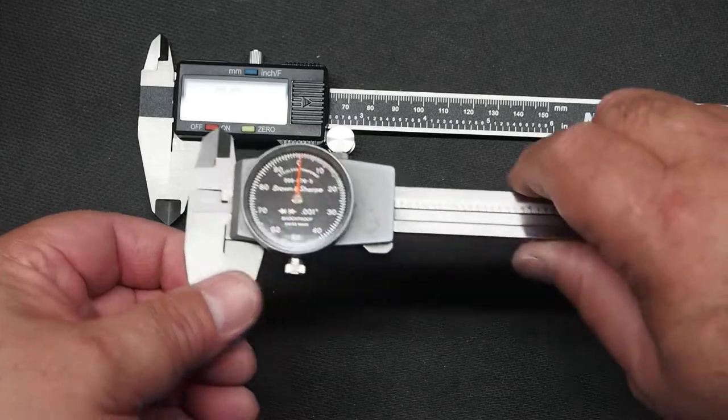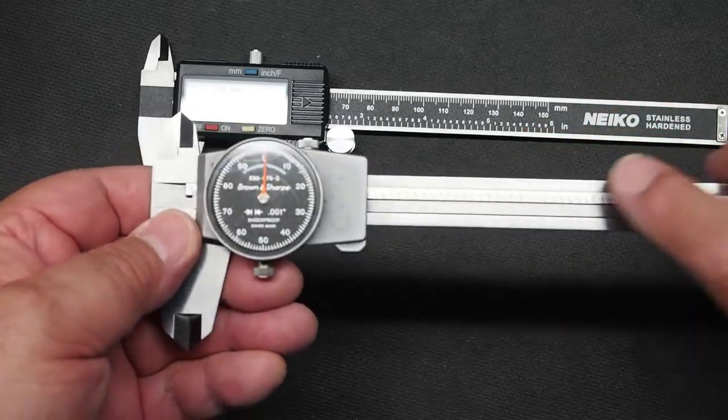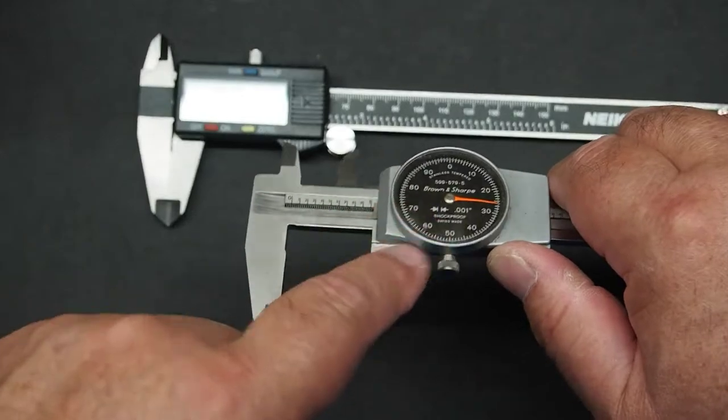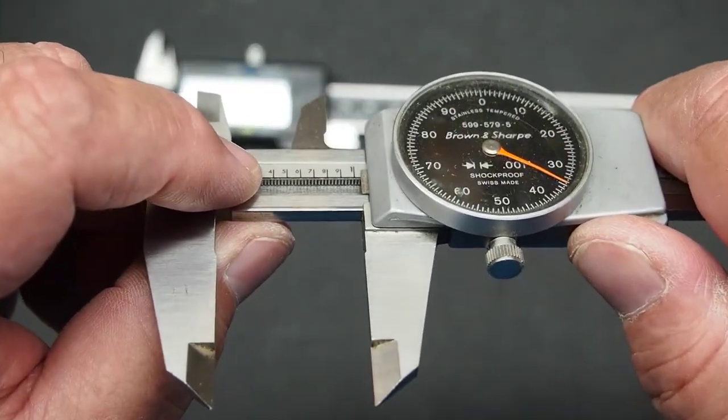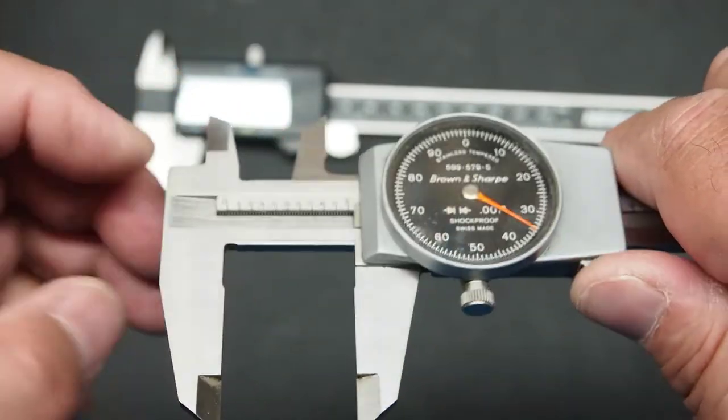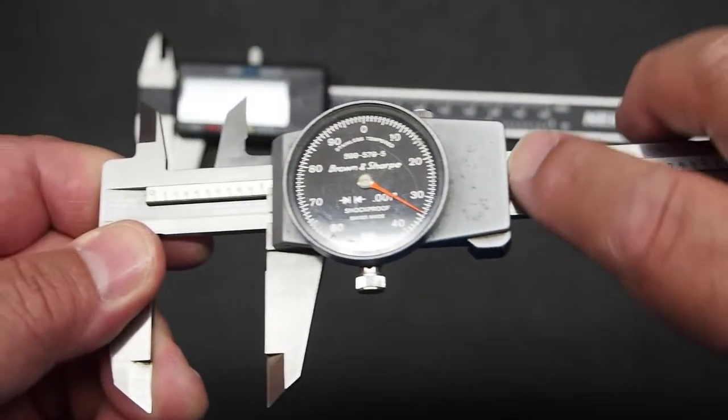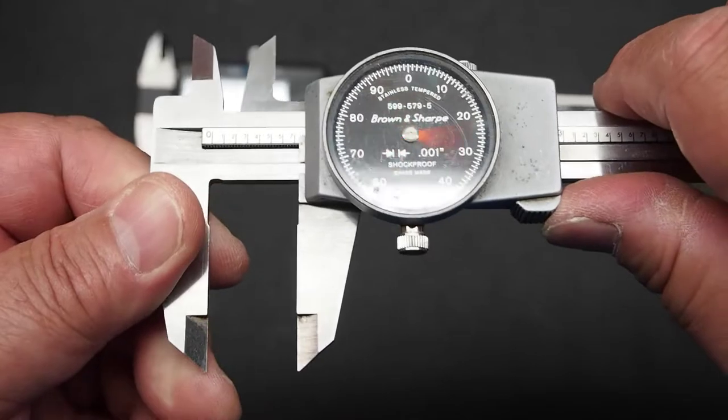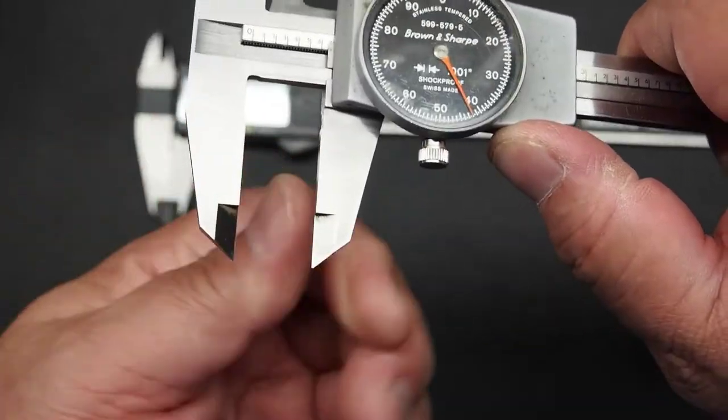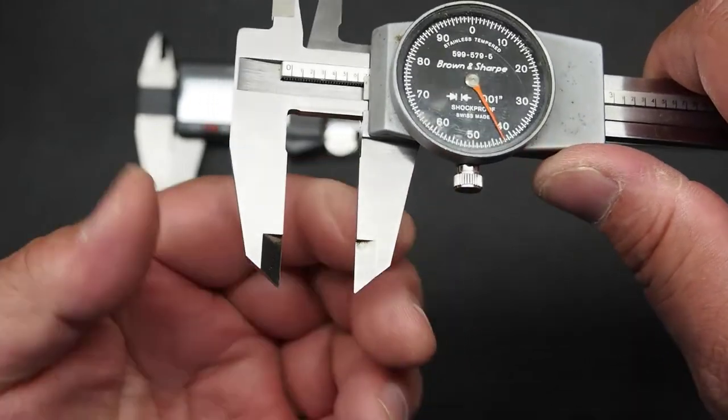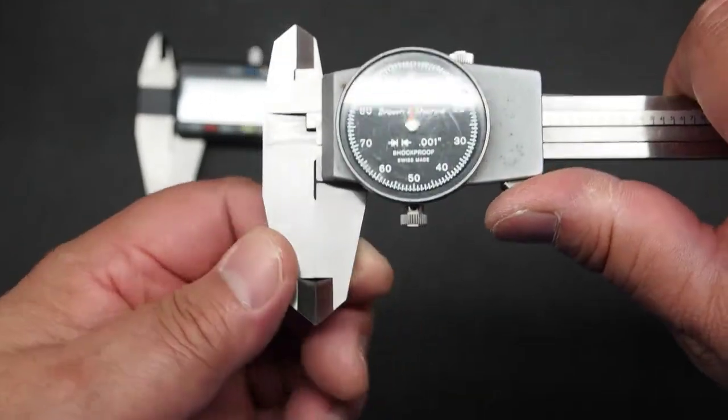Now a couple things about keeping these in good order. You need to make sure you keep these clean. Especially these kind that have the dial have actually a geared rack. I don't know if this will focus close enough. They have a geared rack in here and it's covered by the depth gauge but you want to make sure you keep that clean. Anytime I use any calipers I'll take my finger and wipe the surfaces of the jaws clean and make sure the unit zeros.